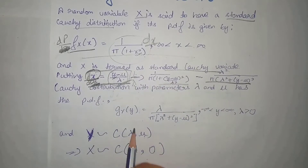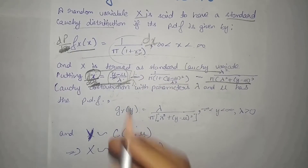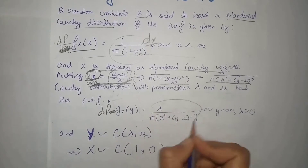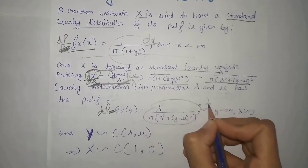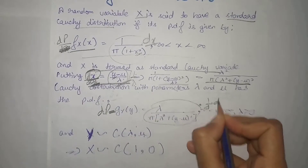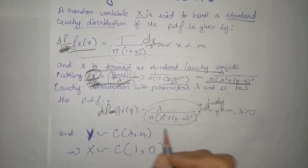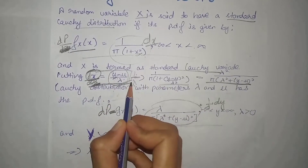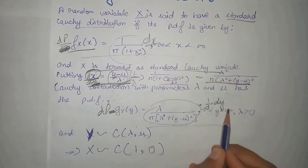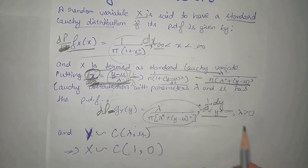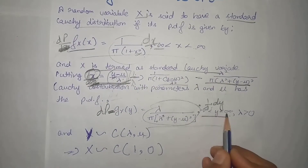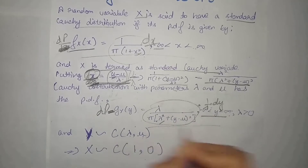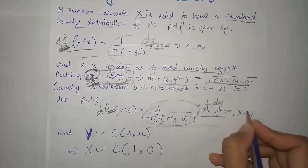So if we look at y's PDF, we have to write this value. Obviously dp is equal to this term multiplied by 1 over lambda dy. We take this value to x by putting this term in x and writing dx in terms of dy, where y lies between minus infinity to infinity, and this value is positive.